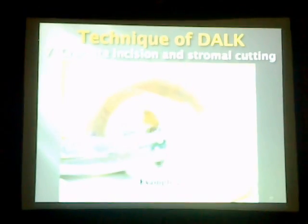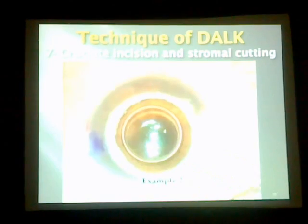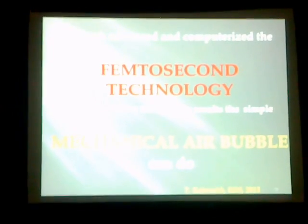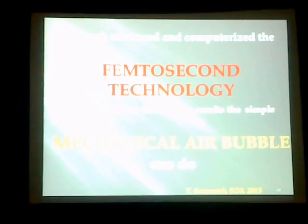Step number seven is making a cruciate incision and stromal cutting. After opening the space, we fill it again with viscous material, and with blunt-tipped scissors we make a cruciate incision in the cornea, then remove the four stromal flaps with right and left corneal scissors. You have to be careful not to over-stretch the corneal tissue and not to apply much pressure over the globe to avoid rupture of Descemet's membrane. Though advanced and computerized, femtosecond laser technology could not achieve the accurate results that this simple mechanical air bubble technique can produce.